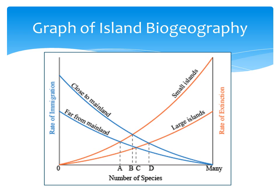There are four different places where a red line crosses a blue line, and each of these crossing points is represented by one of the letters on the x-axis: A, B, C, or D. A represents the place where the rate of immigration on a far island crosses the rate of extinction on a small island — so A represents the total number of species on a far, small island, which is going to be relatively low. The letter D, on the other hand, represents the point where the immigration rate on a close island crosses the extinction rate on a large island. When the immigration rate equals the extinction rate, the number of species stays the same. So D represents a stable number of species on a large island that's close to the mainland.